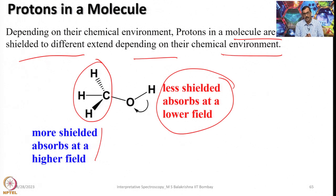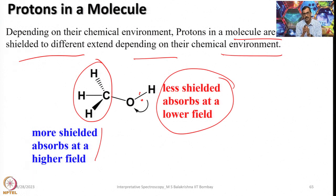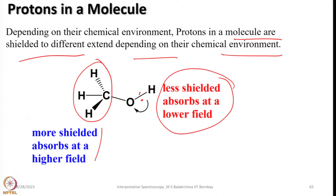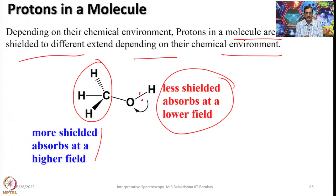Oxygen, being more electronegative, pulls the bonded pair between oxygen and H such that it becomes almost like H-plus. In this case, there is very little electron density surrounding H to generate an induced magnetic field opposing the applied field. The magnitude of the induced magnetic field generated is very minimal; as a result, the actual magnetic field is experienced almost fully by H, making it less shielded. In contrast, the CH3 protons are surrounded by electrons that generate an opposing magnetic field, so they are shielded and observed at a higher field.